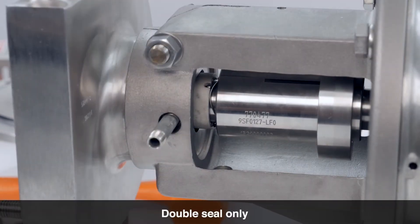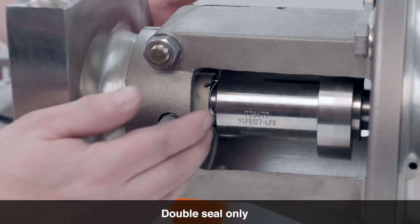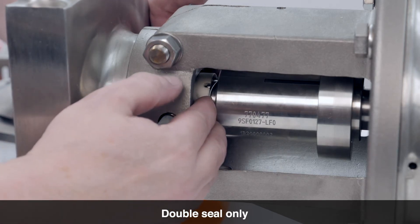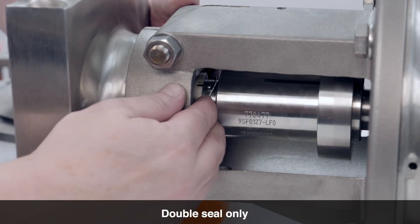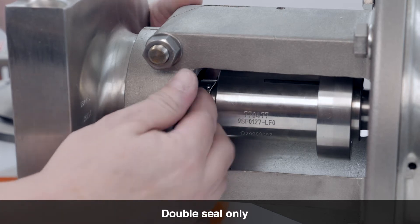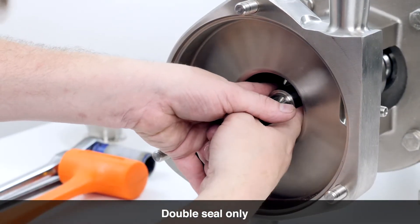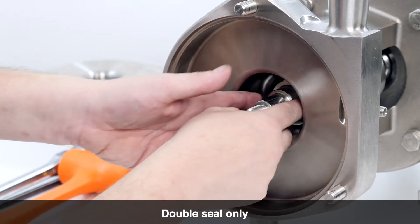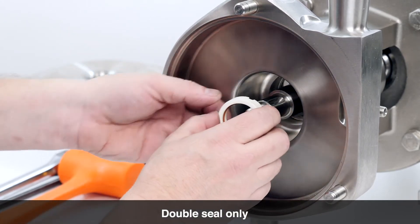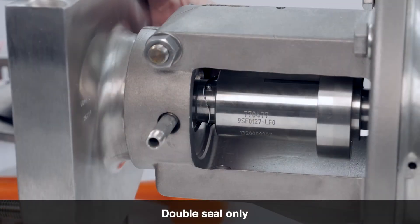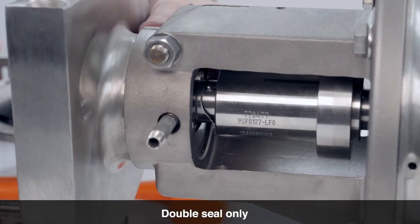Double seal only: Remove the flush seal and discard it. Remove the flush seal spring and discard it.